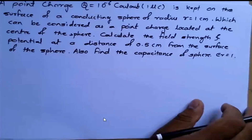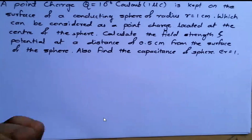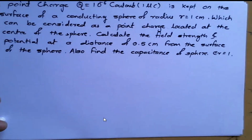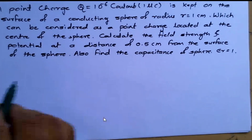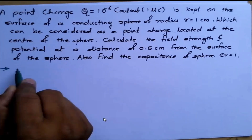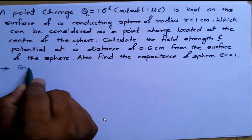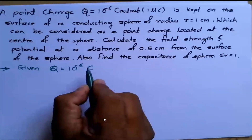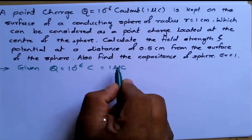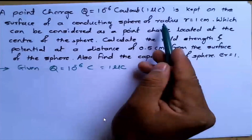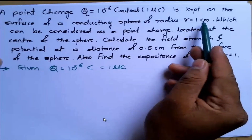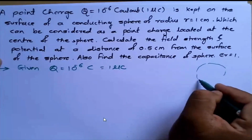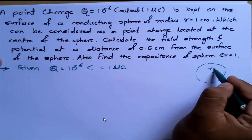Given data: a point charge Q = 10⁻⁶ Coulomb, which is equal to 1 micro Coulomb, is kept on the surface of a conducting sphere, sphere S1, which has a radius R = 1 cm.